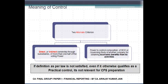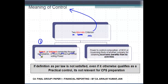In the previous videos we were talking about the concept of control. Let us now see what control exactly means. There are two alternate criteria for ascertaining whether or not control exists. The first one is direct or indirect ownership through subsidiaries of more than one half of the voting power. Let me show you a diagram which will help you understand this concept better.